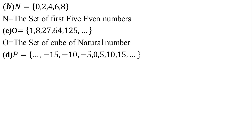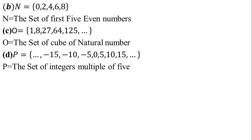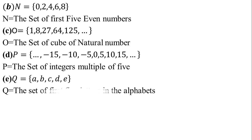In part D, the given numbers are integers that are multiples of 5. So we write: P is the set of integers that are multiples of 5. In part E, Q = {A, B, C, D, E}. These are the first 5 English alphabet letters. The answer for part E: Q is the set of the first 5 letters of the alphabet, or the first 5 English alphabets.